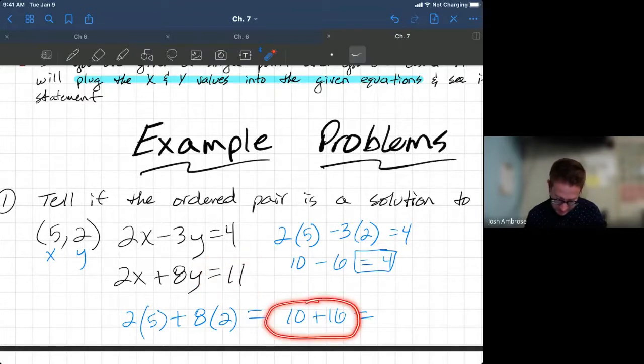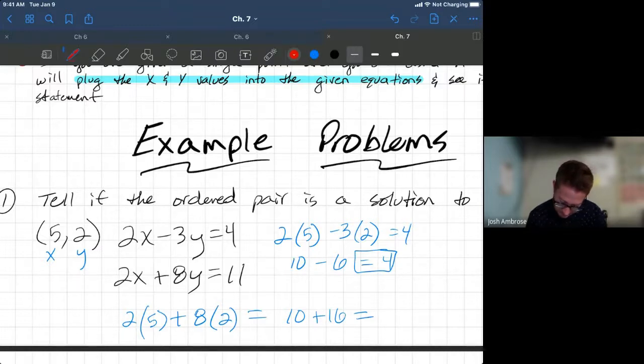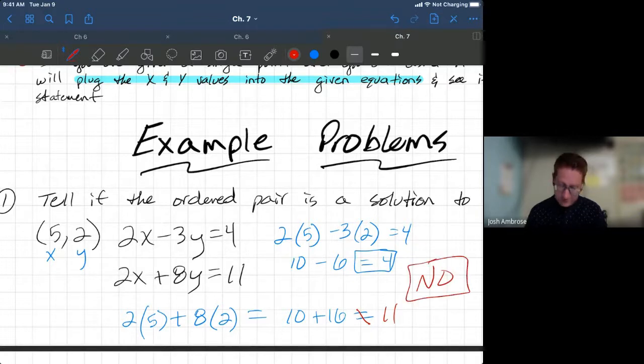And what we have right here is a 10 plus 16 equaling, and now what they're telling us is this should equal 11. Does 10 plus 16 equal 11? So let's go ahead and change the color here. Does it equal 11? No, it does not. So is the ordered pair a solution? No. The ordered pair is not a solution. It worked in one, so we had to test the other, but it did not work in the other one. So nope, not a solution. Moving on.